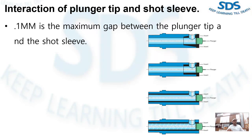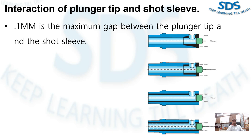Point one mm is the maximum gap between the plunger tape and the short sleeve. During the casting process, we have to maintain this at all times during production. If at any time the gap exceeds point one mm, the alloy is likely to penetrate the space and flash or flow being will occur, causing excessive wear on both the short sleeve and the plunger tape.